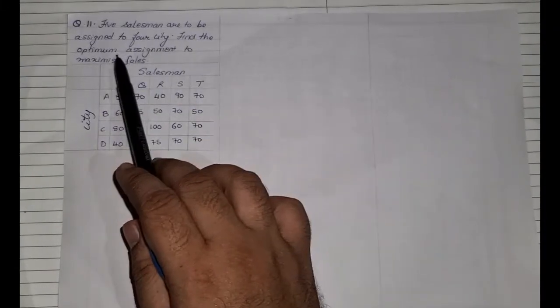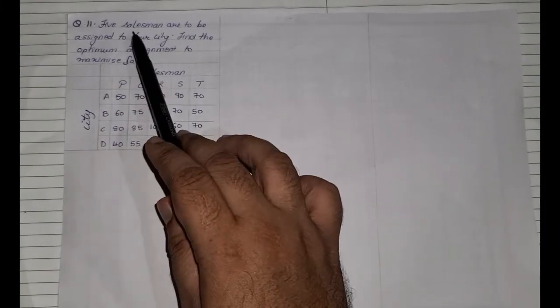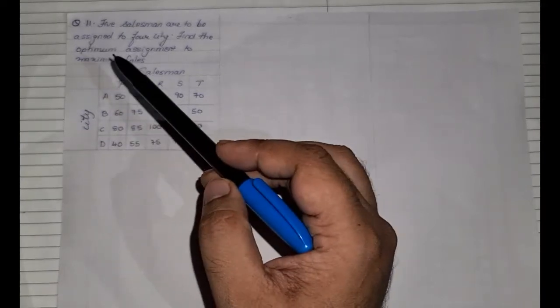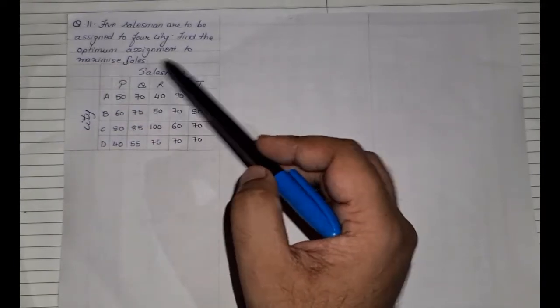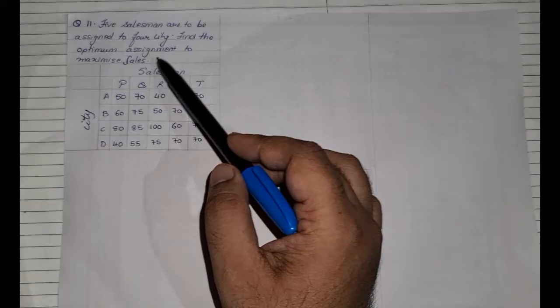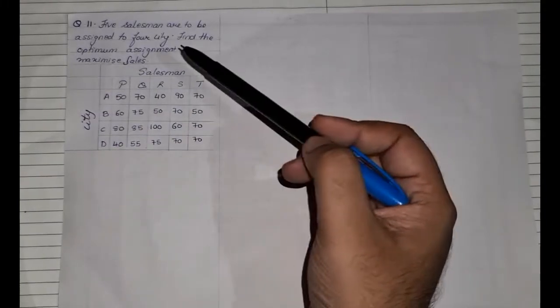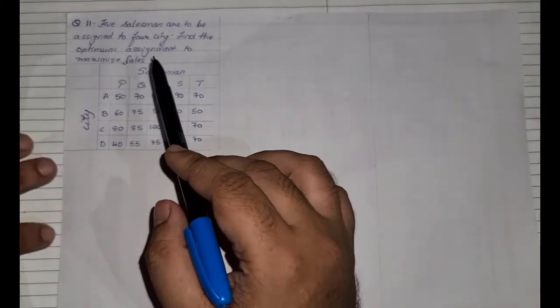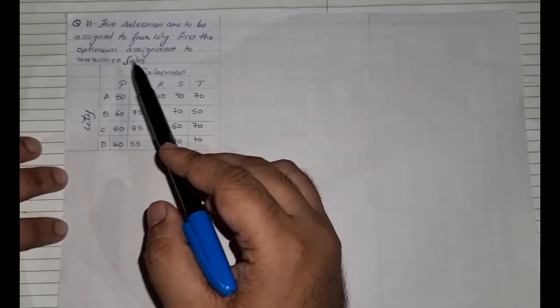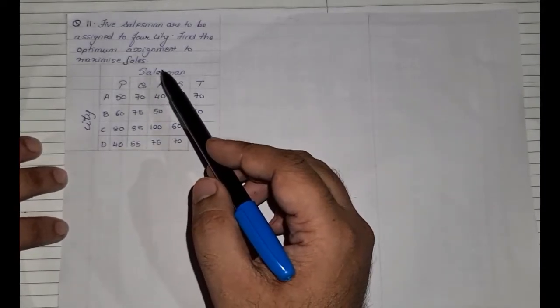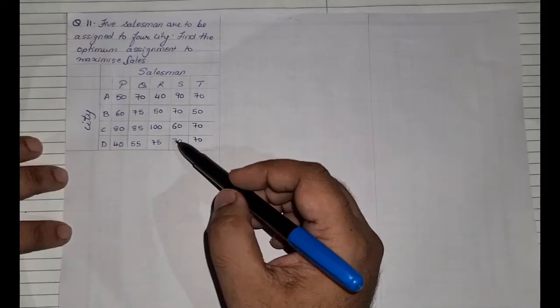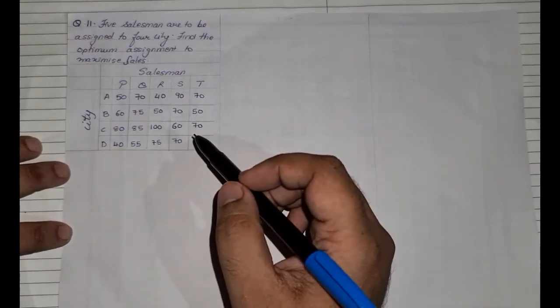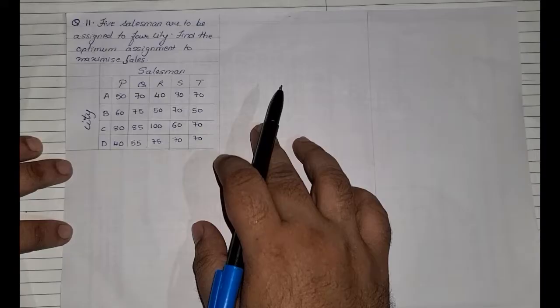The question states: five salesmen are to be assigned to four cities. So five salesmen, four cities — it is already an unbalanced problem. Find the optimal assignment to maximize the sales. So now it is a maximization problem which is unbalanced. Whenever you get an unbalanced maximization problem sum, this is how we need to solve it.